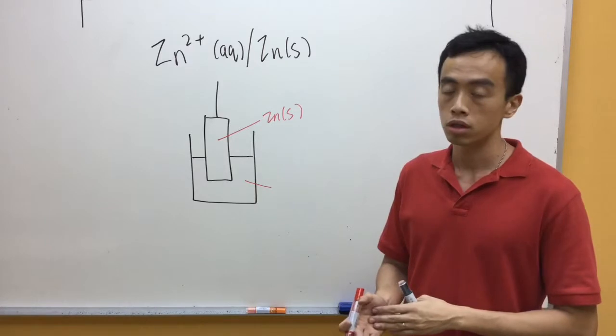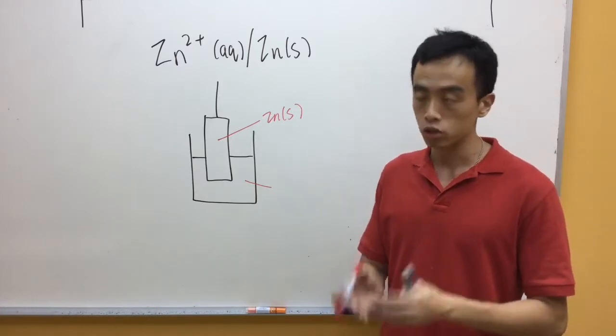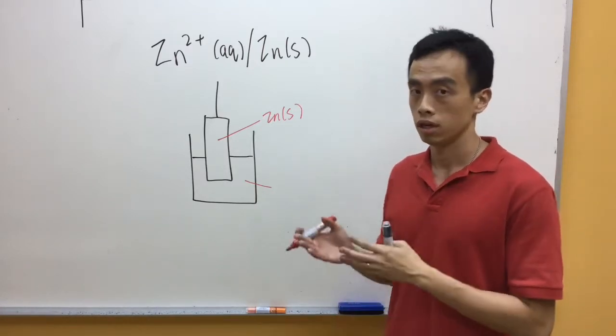Now the concentration of the solution must be 1 mol per dm cubed, so it has to be specifically mentioned in your diagram.